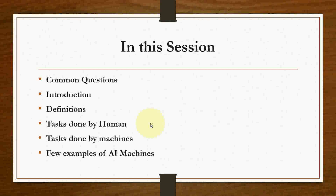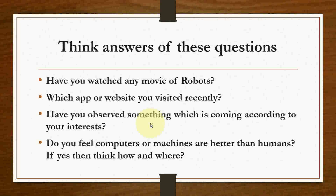Let me begin with some common questions to think about. First: have you watched any movie about robots? If yes, you can understand there is a big role of AI in those movies. Second: which app or website have you visited recently — Amazon shopping or Google? Some websites and apps are already using AI. Have you noticed content appearing according to your interest?